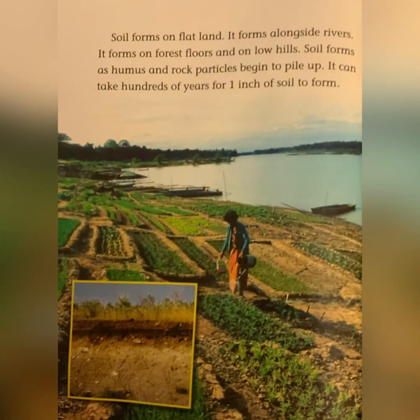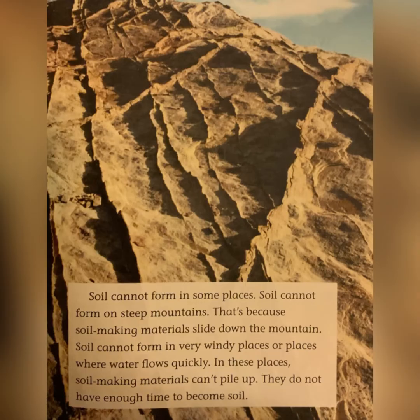Soil forms on flat land, alongside rivers, on forest floors, and on low hills. Soil forms as humus and rock particles begin to pile up. It can take hundreds of years for one inch of soil to form. Soil cannot form in some places — it cannot form on steep mountains because soil-making materials slide down the mountain. Soil cannot form in very windy places or places where water flows quickly, because soil-making materials can't pile up and do not have enough time to become soil.